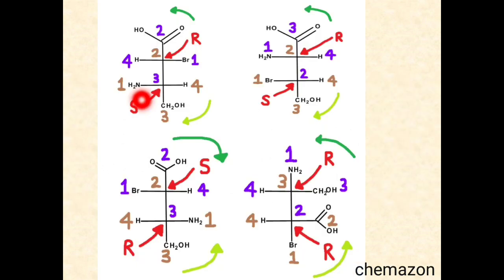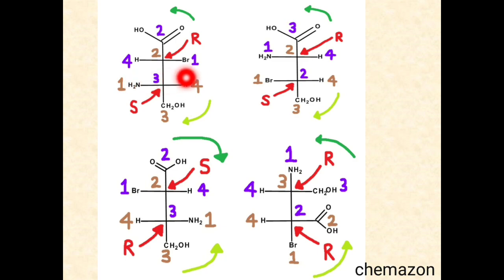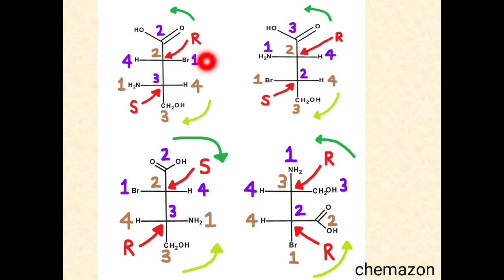Looking at the first option, priority rules are assigned according to atomic number. At the second carbon, bromine gets the first priority. Comparing the adjacent carbon, it gets the second priority as it is attached to three oxygens. Hydrogen gets the least priority. Going from 1 to 2 to 3 it is anti-clockwise, but the fourth priority group is on the wedge or horizontal, hence the configuration is R.